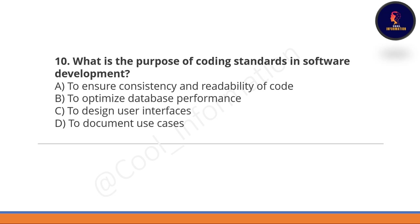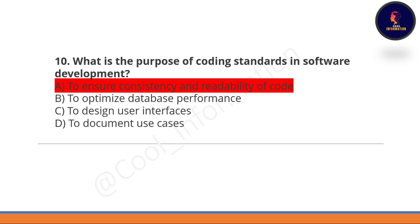Next question: what is the purpose of coding standards in software development? Option A: to ensure consistency and readability of code. Option B: to optimize database performance. Option C: to design user interface. Option D: to document use cases. Option A is correct — to ensure consistency and readability of code.